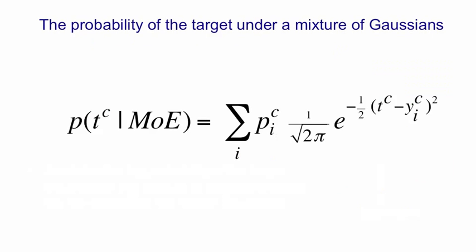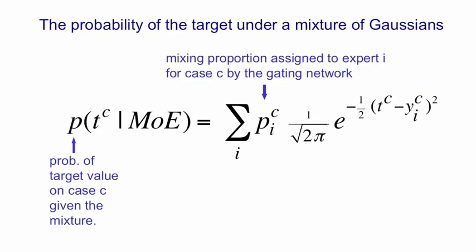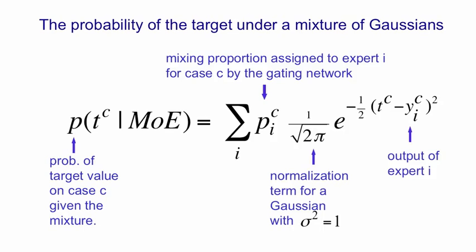So that leads to the following model for the probability of a target given a mixture of experts. The probability is on the left, and it's the sum of all the experts of the mixing proportion assigned to that expert by the manager or gating network times e to the minus the squared difference between the target and the output of that expert scaled by the normalization term for a Gaussian with a variance of 1. And so our cost function is simply going to be the negative log of that probability on the left. We're going to try and minimize the negative log of that probability.